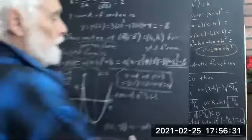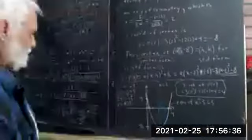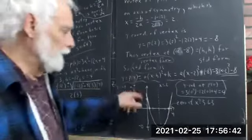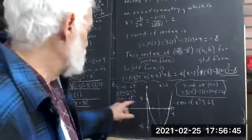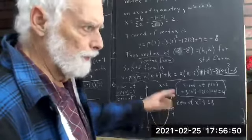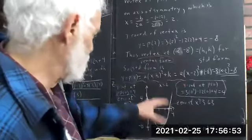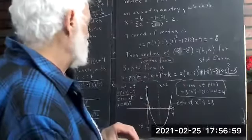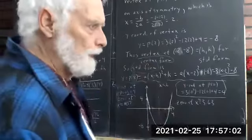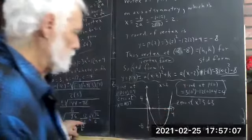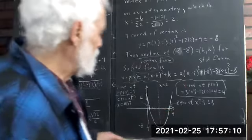The graph has zeros at approximately 0.037 and 3.63. Now, how do we find where the vertex is? The vertex is on the axis of symmetry at x = −b/2a.